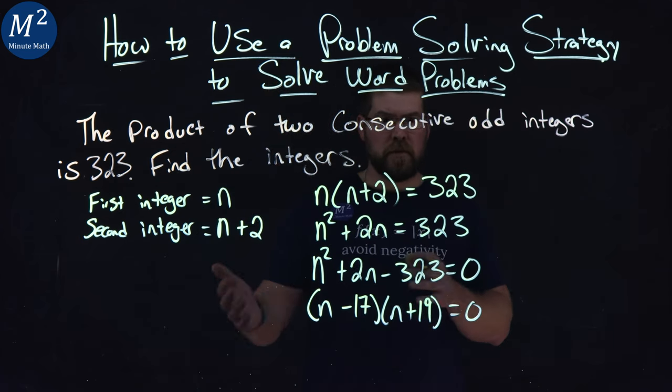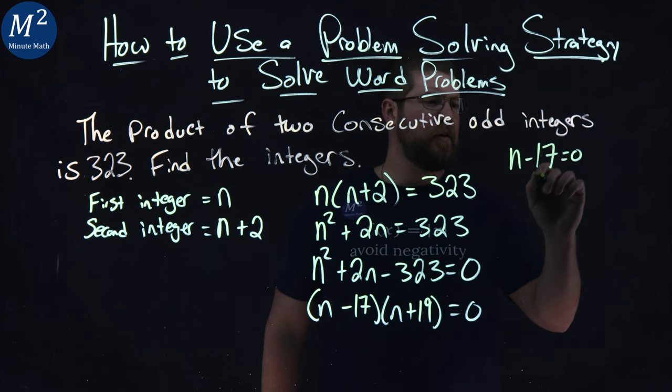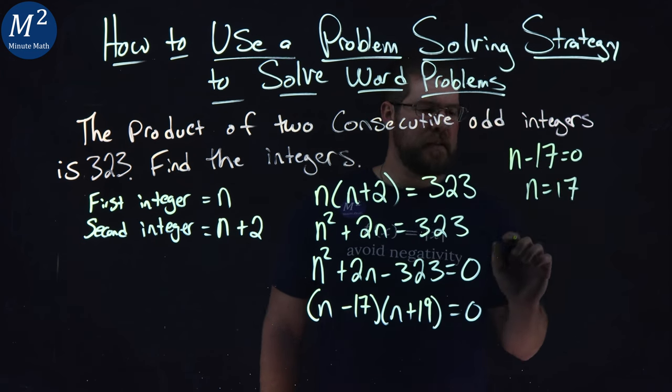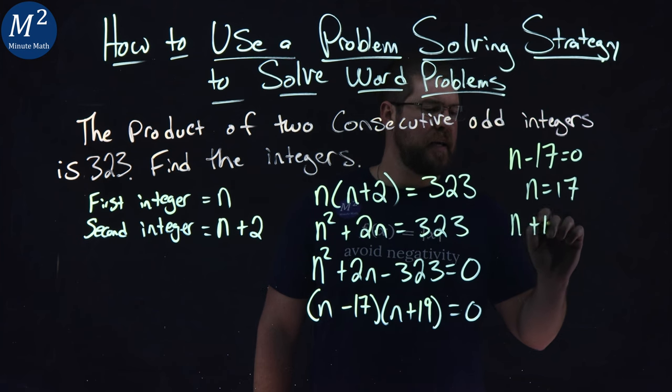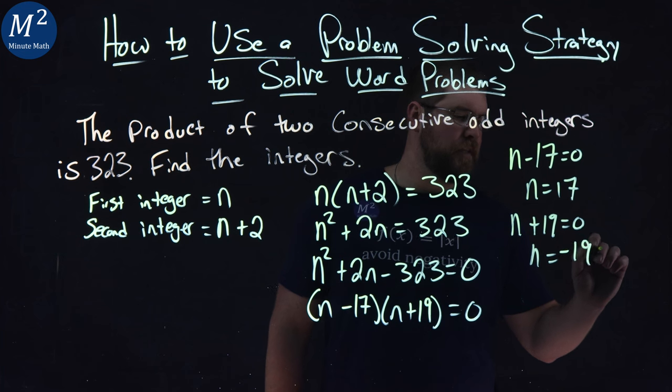From there, we solve each one individually, which we can do up here. n minus 17 equals 0, n equals positive 17. And n plus 19 equals 0, and n equals, subtract both sides by 19, negative 19.